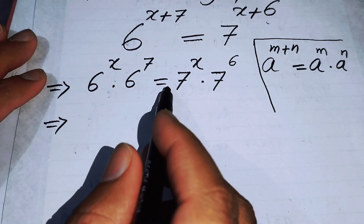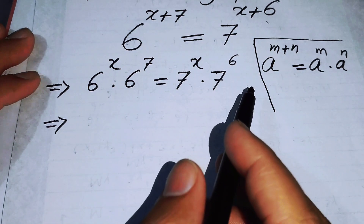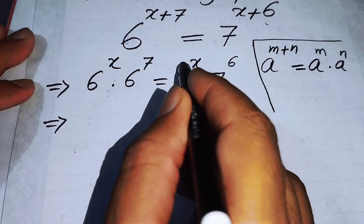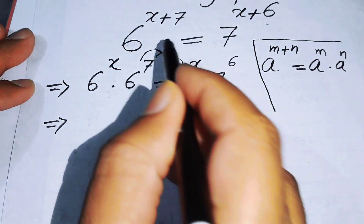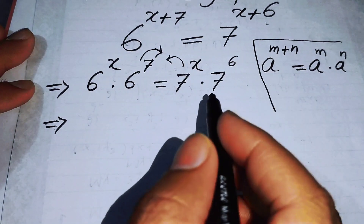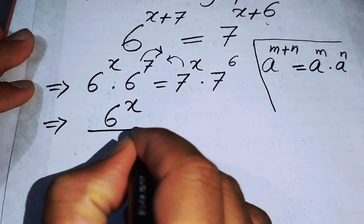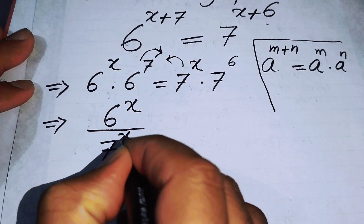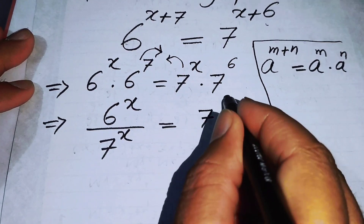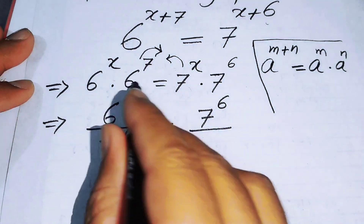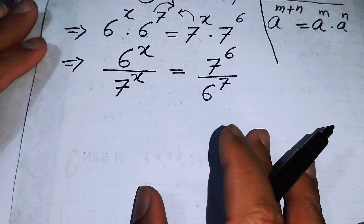After that, we will move all the terms involving x to the left-hand side and all other terms to the right-hand side. We move 7 to the power of x to the left and the constant term to the right, so it becomes 6 to the power of x over 7 to the power of x, equals 7 to the power of 6 over 6 to the power of 7.